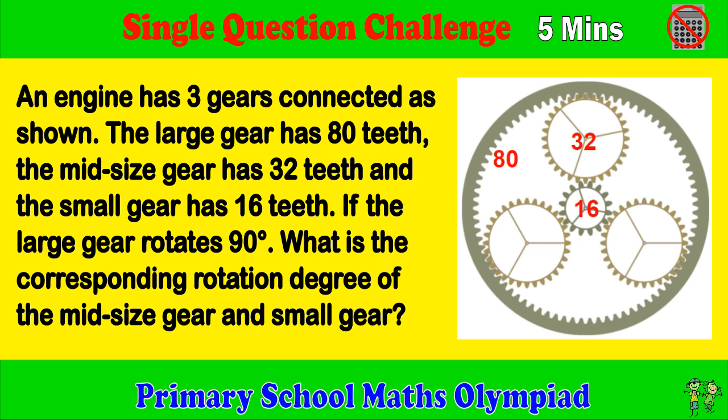An engine has 3 gears connected as shown. The large gear has 80 teeth, the midsize gear has 32 teeth, and the small gear has 16 teeth. If the large gear rotates 90 degrees, what is the corresponding rotation degree of the midsize gear and small gear?